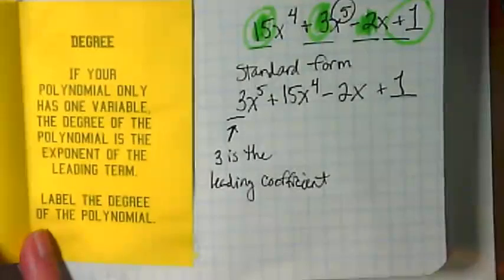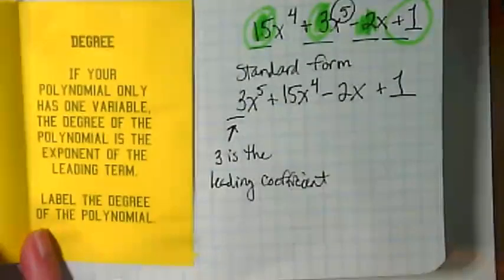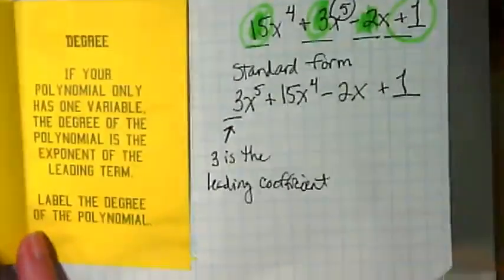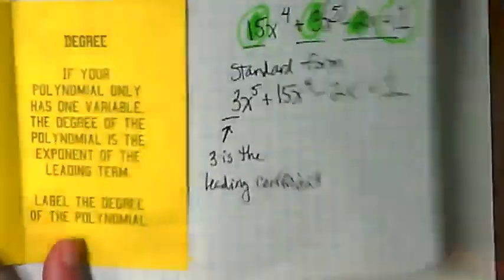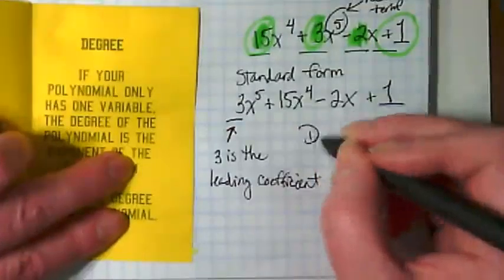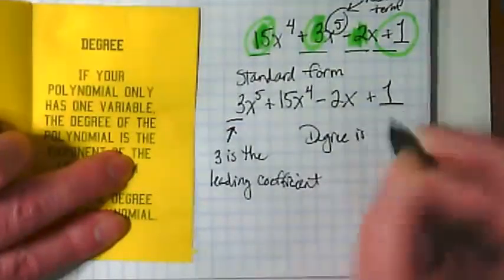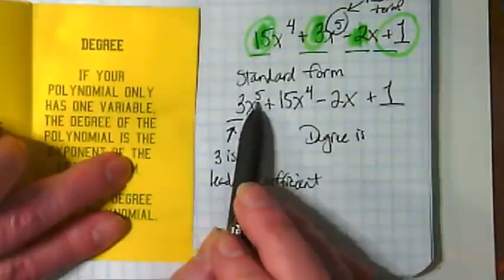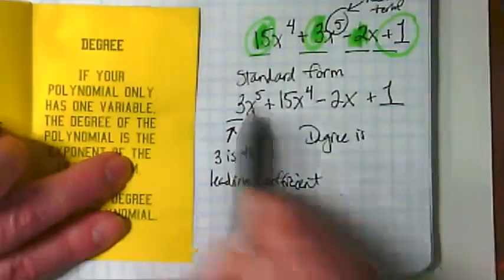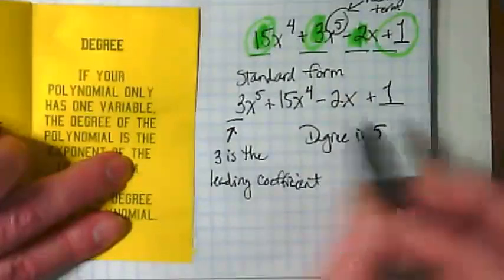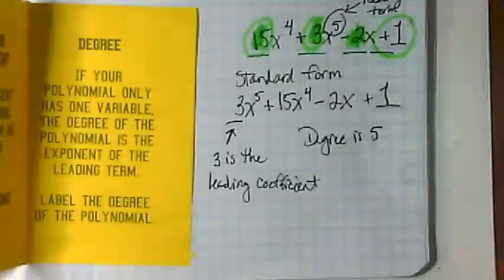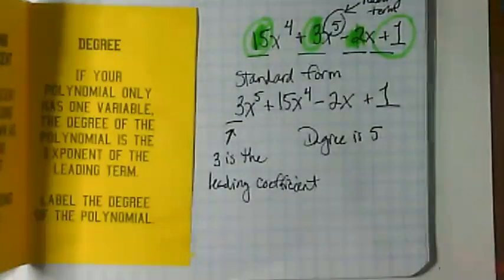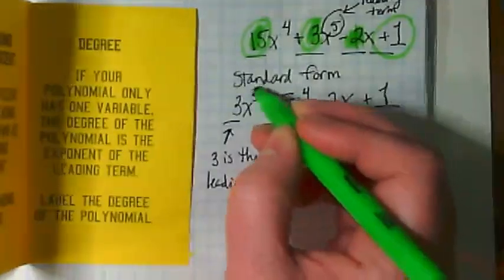And finally, the degree. If your polynomial only has one variable, the degree of the polynomial is the exponent of the leading term. Label the degree of the polynomial. We're just going to put here degree is what's the highest power we have here? So that's the degree. The degree is 5 because of this.